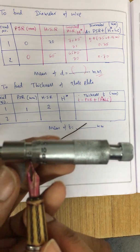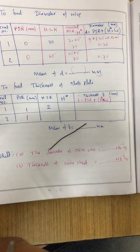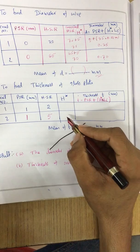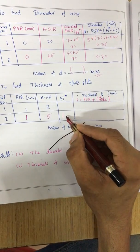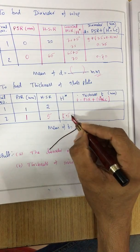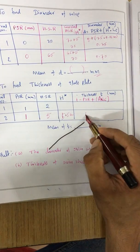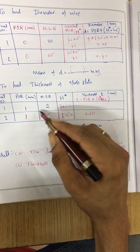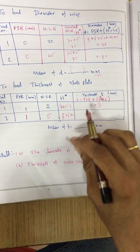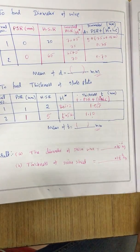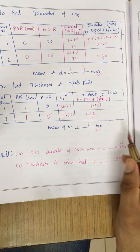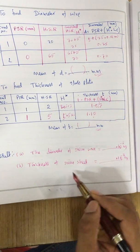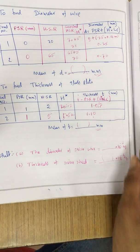So PSR is 1 and the head scale reading is 5. Corrected HSR = 5 + 5 = 10. Total reading = 1 + 10 × 0.01 = 1.10mm. For the second trial, HSR gives a corrected value leading to a total reading of 1.07mm. Taking the mean of both trials gives the thickness in millimeters. Finally, the diameter can be converted to meters (×10⁻³ m) and the thickness similarly converted. Thank you for watching.